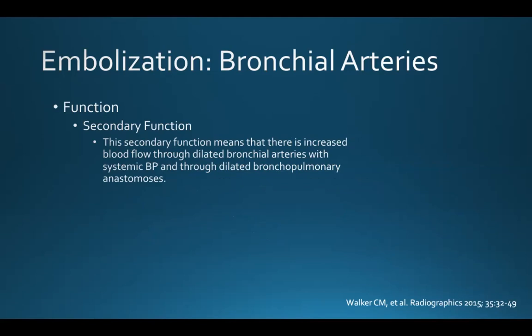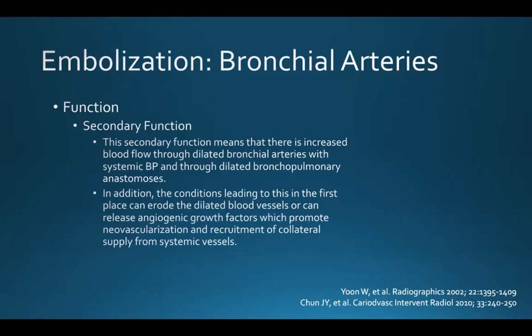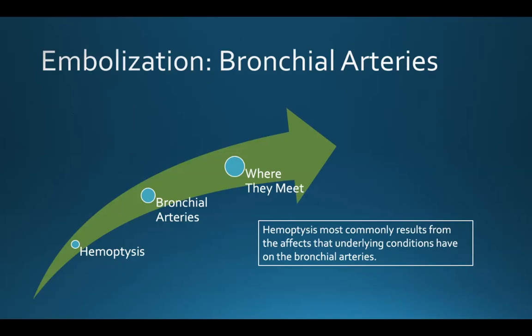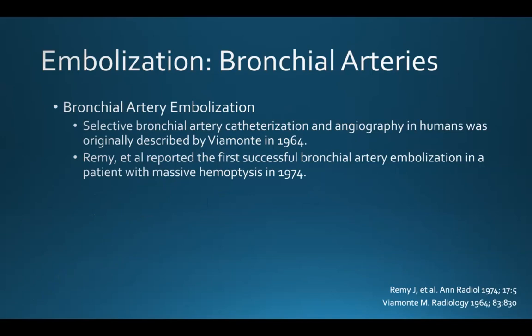This secondary function means there's increased blood flow through dilated bronchial arteries that are under systemic blood pressure and through dilated bronchopulmonary anastomoses. In addition, the conditions leading to this can erode the dilated blood vessels or release angiogenic growth factors, which promote neovascularity and recruitment of collateral supply from systemic vessels. All of this means that the dilated blood vessels are fragile and prone to rupture, and ultimately this can lead to hemoptysis. So hemoptysis most commonly results from the effects that underlying conditions have on the bronchial arteries, which is why it's important to discuss bronchial artery embolization.